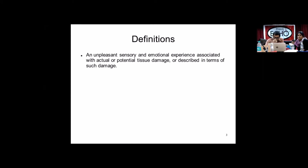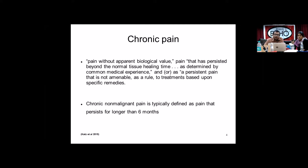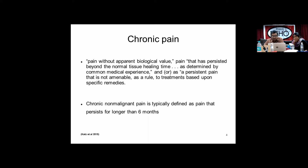Pain has been defined as an unpleasant sensory and emotional experience associated with actual or potential tissue damage, or described in terms of such damage. Chronic pain is pain without any apparent biological value. It persists beyond the normal tissue healing time, or is defined as persistent pain not amenable to treatments based on specific remedies. Chronic non-malignant pain is typically defined as pain that persists for longer than six months.